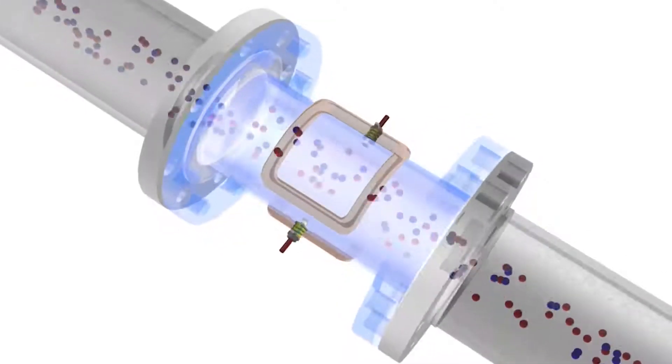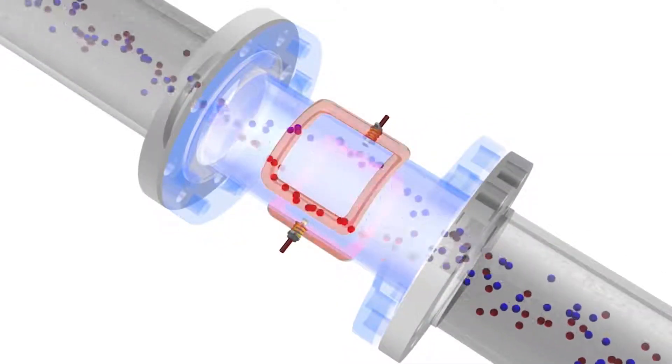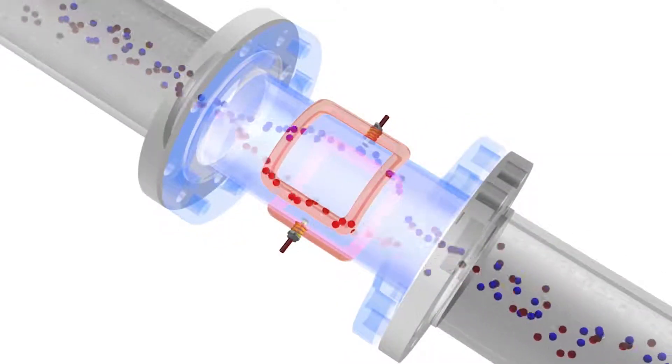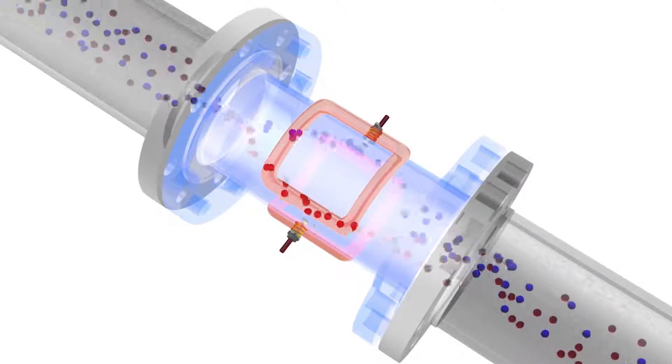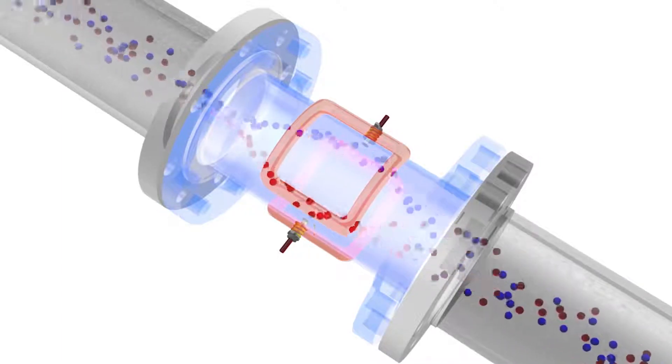Once the pipe is full and the fluid begins to flow, the force of the magnetic field causes the negatively and positively charged particles of the fluid to separate as they pass through the magnetic field.